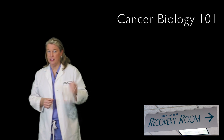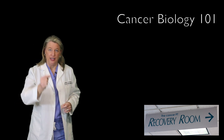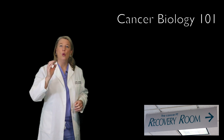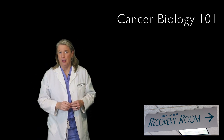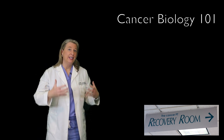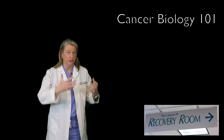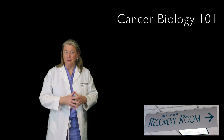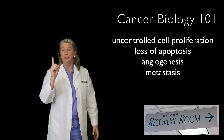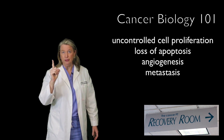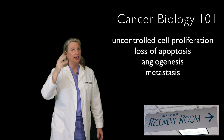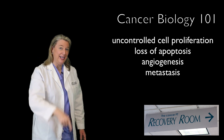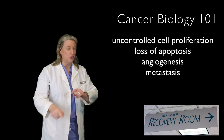So let's get into the biology of cancer cells. There are well over 100 different kinds of cancer, but they all have 4 relatively similar distinguishing characteristics: uncontrolled cell proliferation, lack of apoptosis, angiogenesis, and metastasis. Let's break down those 4 pieces.